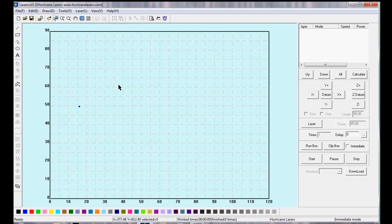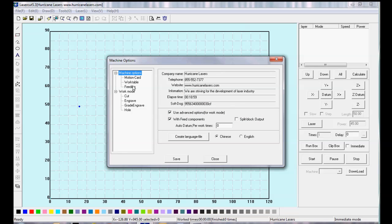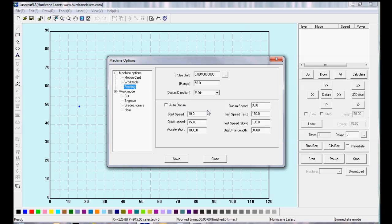Go to Machine Options Feeding. If you set up your software correctly, there is already a default setting which should not be too far off from where you want to end up.